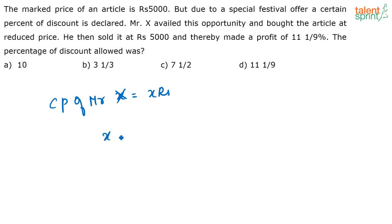So he is selling it for X times (1 plus 11 1/9 percentage), right, by 100. So he is selling it and making a profit, and he is selling it for Rs 5,000 and making a profit.